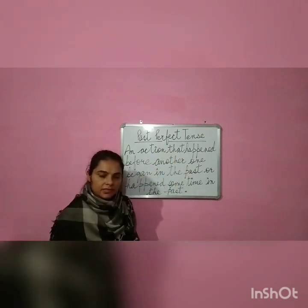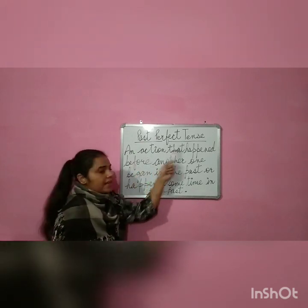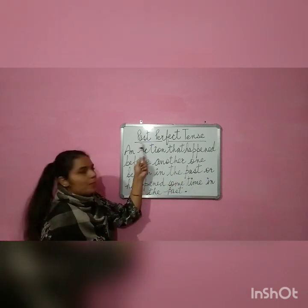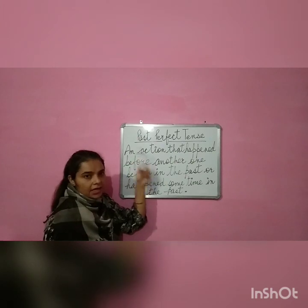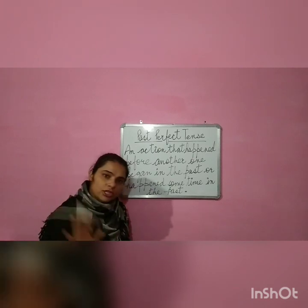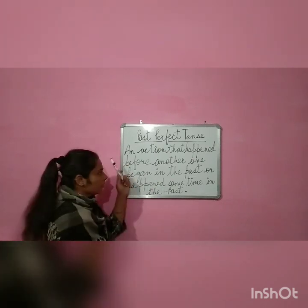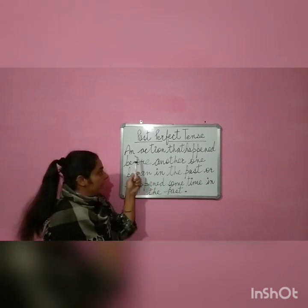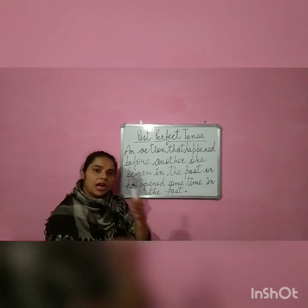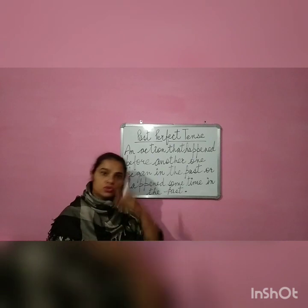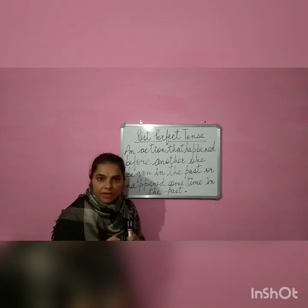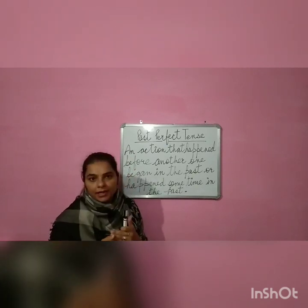So what is past perfect tense? An action that happened before another one began in the past. Is past se pata chal raha hoga — from this word 'past', this shows that we are talking about the past time. Bhoot kaal — jho kaam ho chuka hai, jho time bheet gaya hai. Us time mein jho action hoa — an action that happened before another one began in the past. Humne past mein kiya, doosra kaam shuru hone se pahle — means humne pahle ek kaam kara, uske baad doosra kaam start kiya.